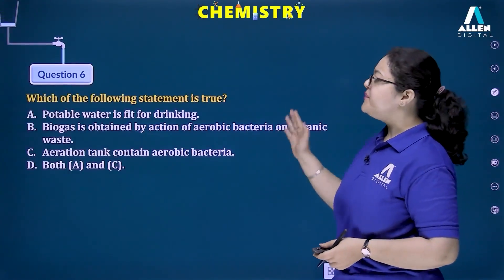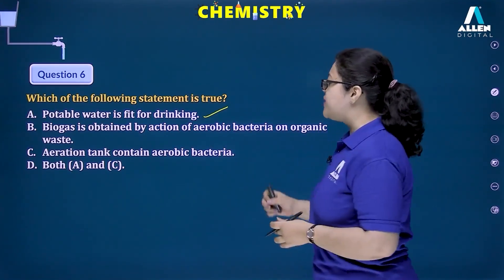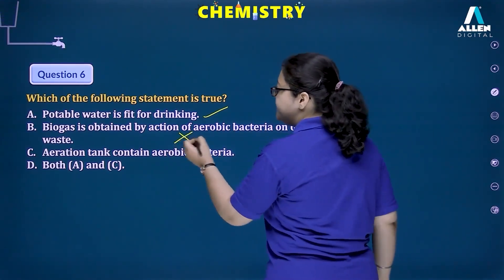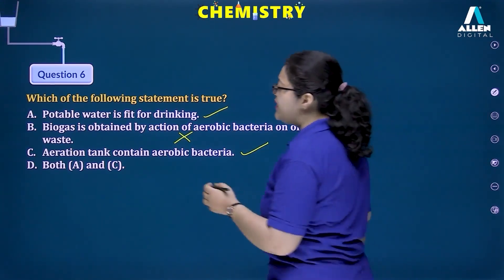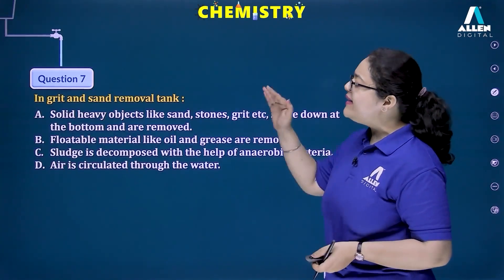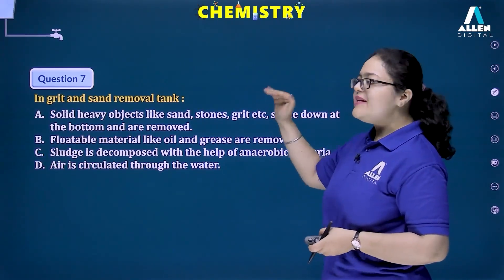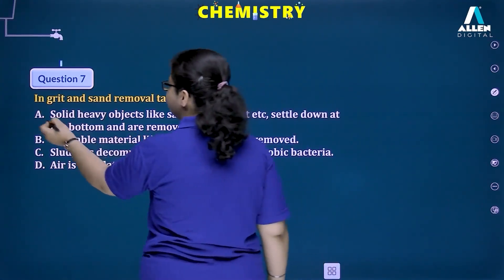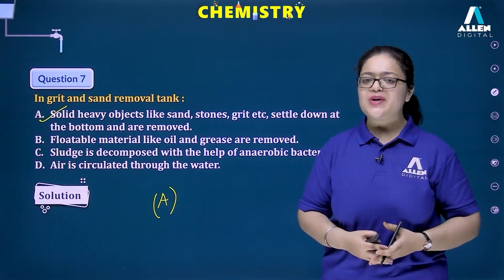Question 6: Which statement is true? Potable water is fit for drinking — correct. Biogas is obtained by the action of aerobic bacteria on organic waste — incorrect, it is anaerobic bacteria. The aeration tank contains aerobic bacteria that work in the presence of oxygen — correct. So both A and C are correct, making option D the correct answer. Question 7: In the grit and sand removal tank, the function is that heavy objects like sand, stones, grit, silt, and clay particles settle down and are removed — option A is correct. I hope you all understood the topic. Thank you, students.